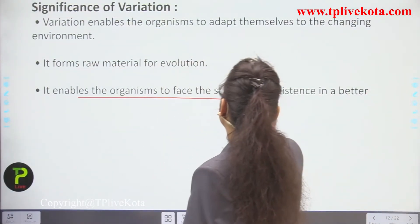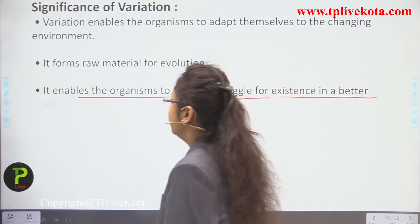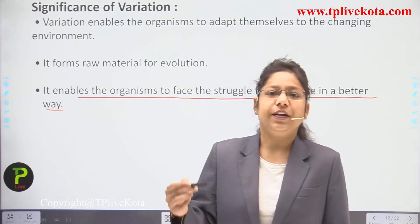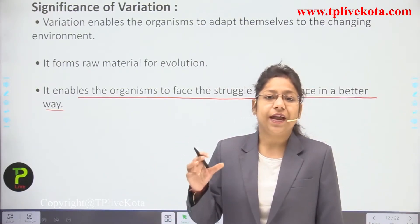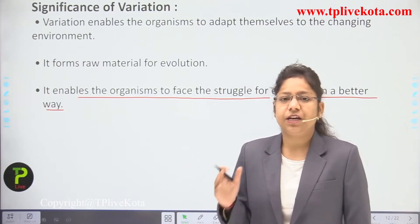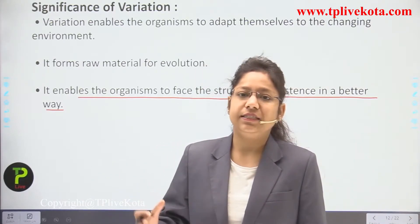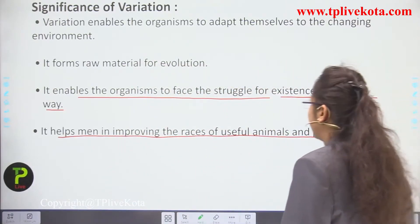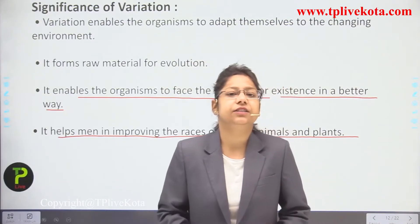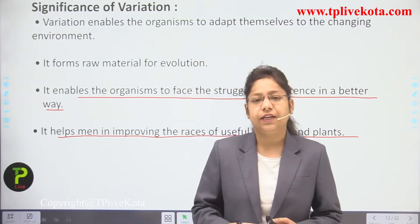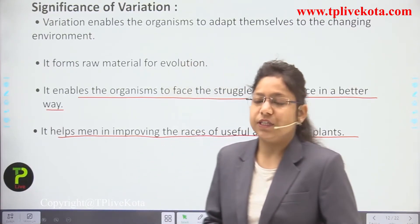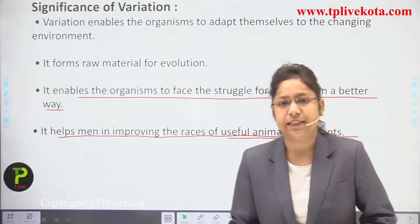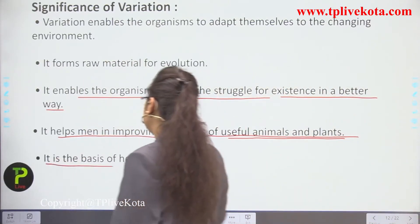Variation enables organisms to face the struggle for existence in a better way and get adjusted to their environment. It also helps humans in improving the races of useful animals and plants — as characteristics get advanced, the races improve. It is also the basis of heredity, as one gene transferred from a parent to offspring forms the basis from which that offspring will one day become a parent and transfer the gene further.